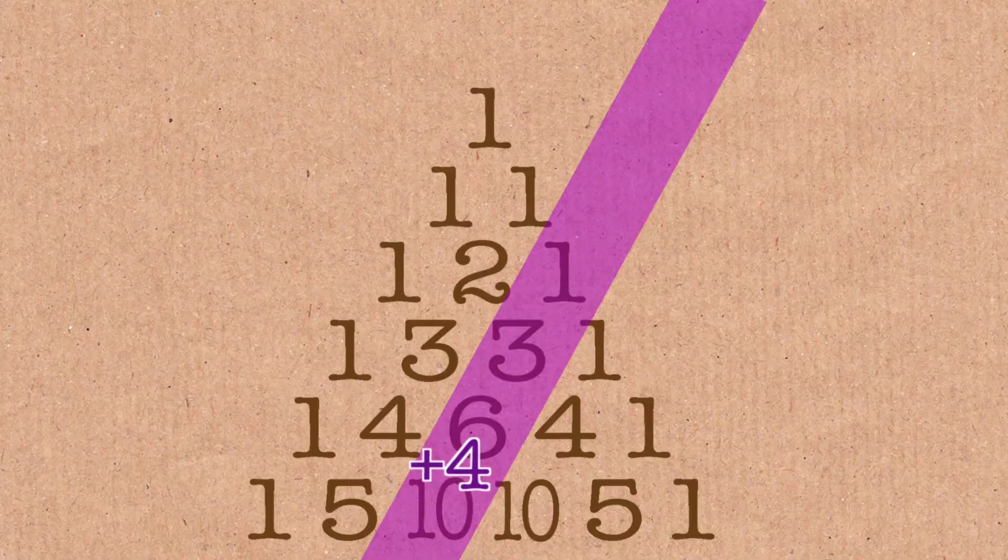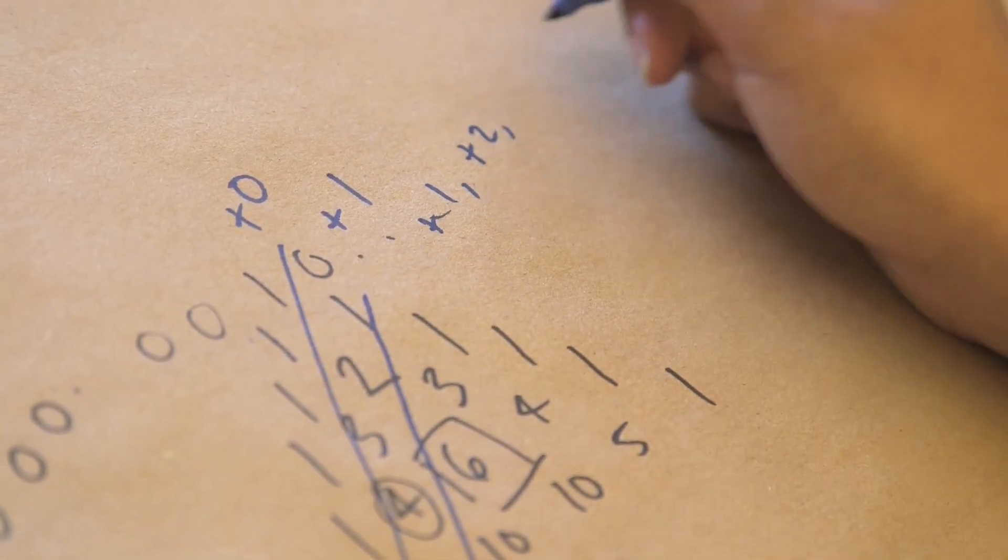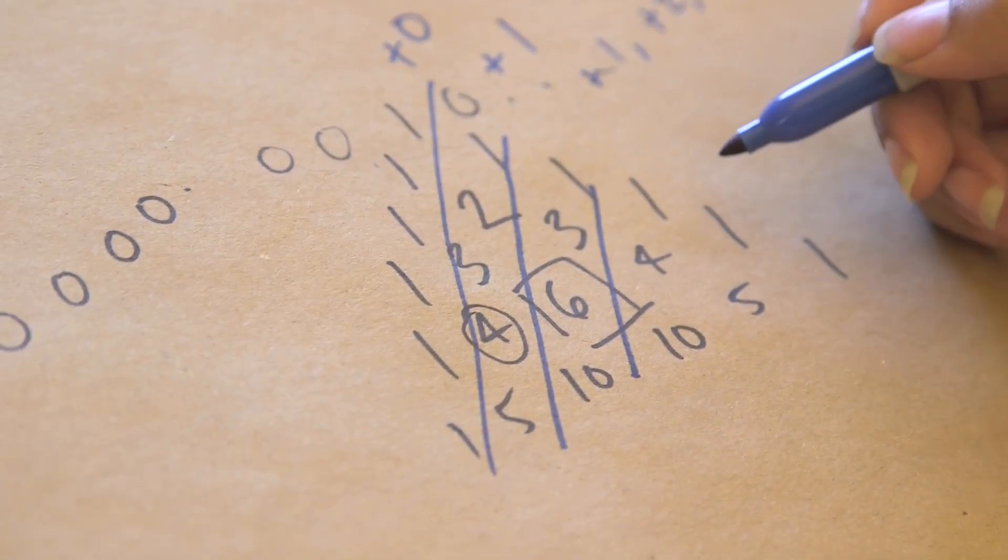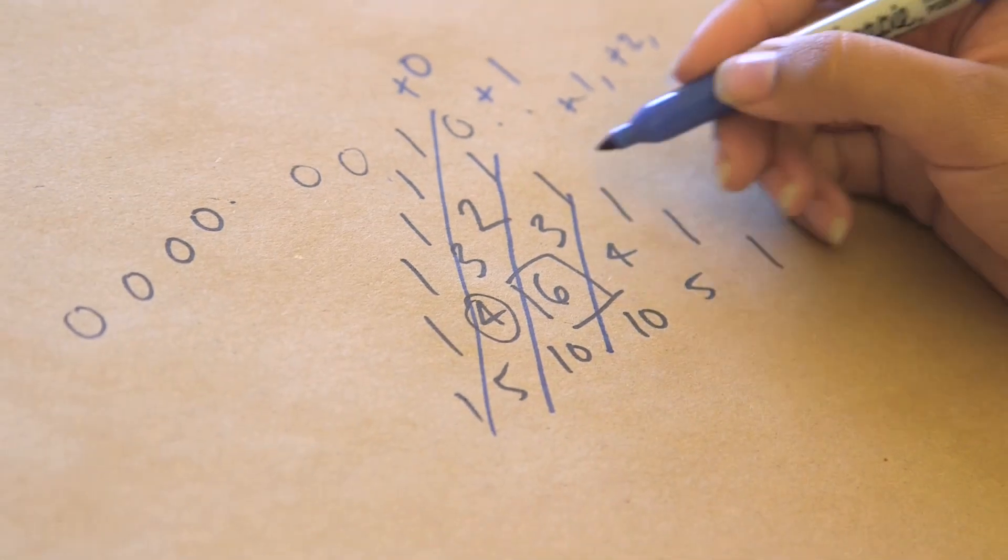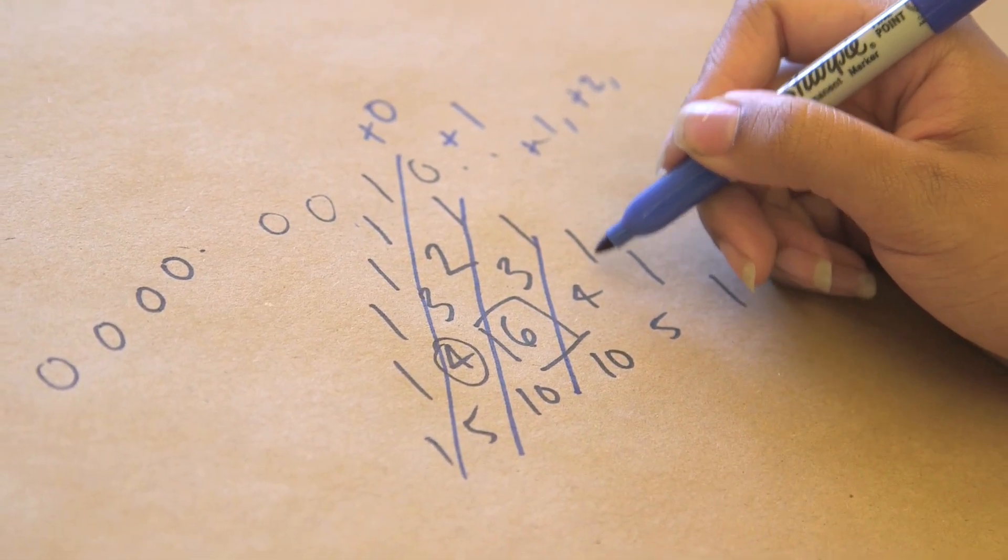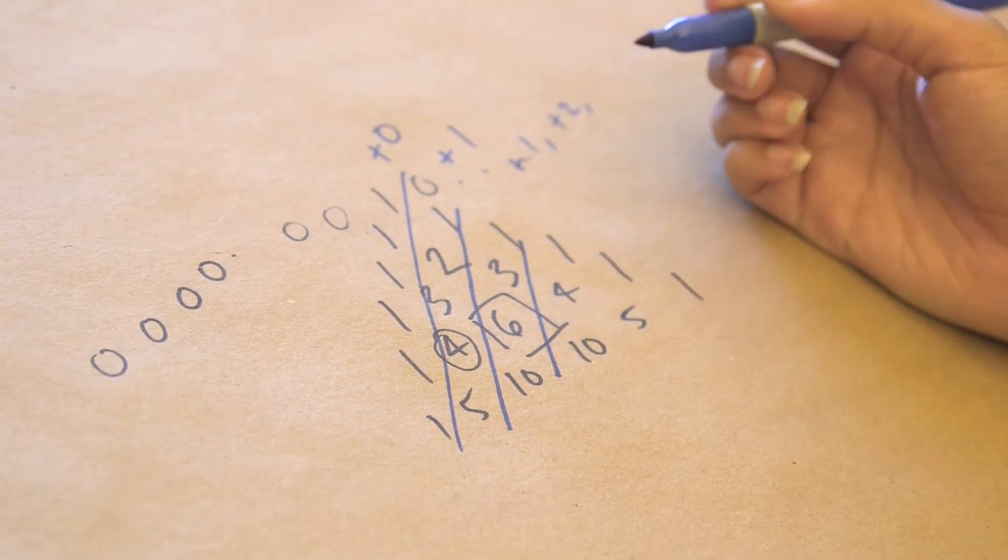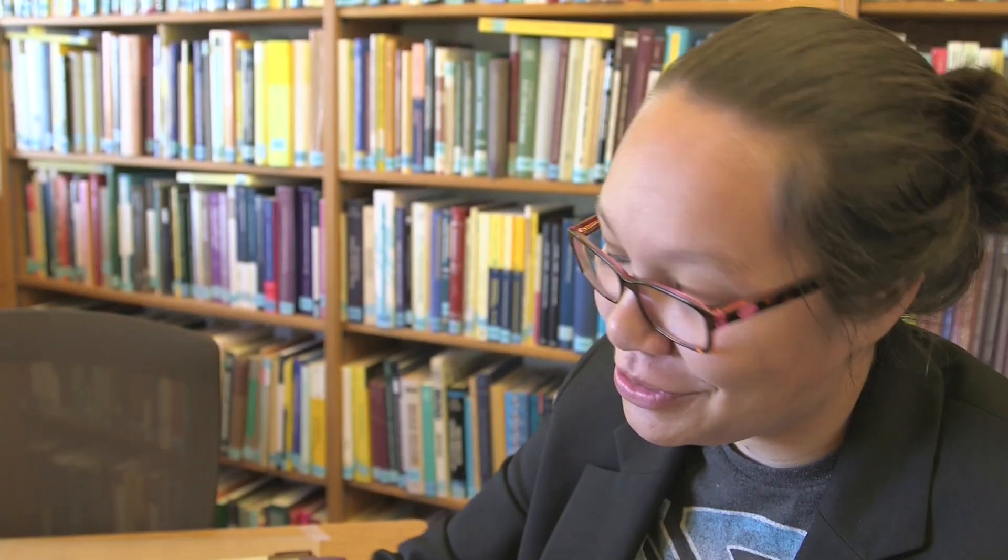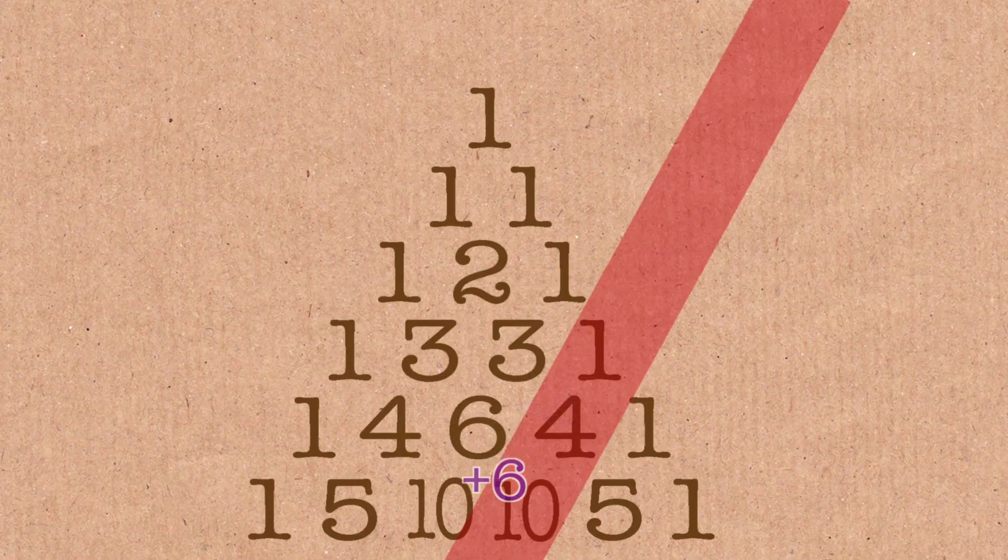So around here one may be tempted to look for more patterns like right here is like plus what, three plus six, but that's when you start to notice what we've been doing all along which was just adding the number to the top left like Pascal wanted us to.